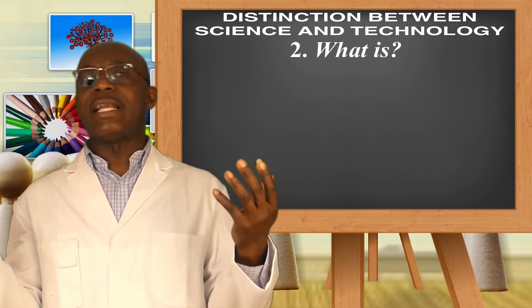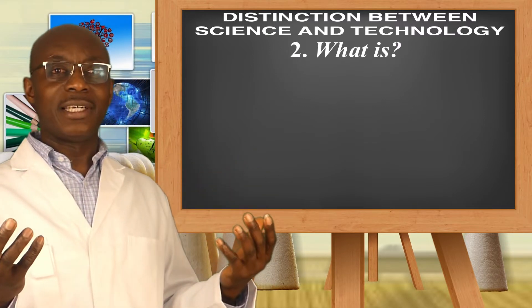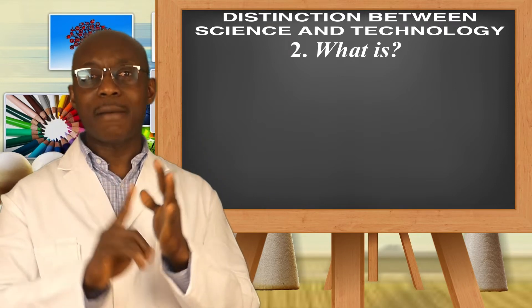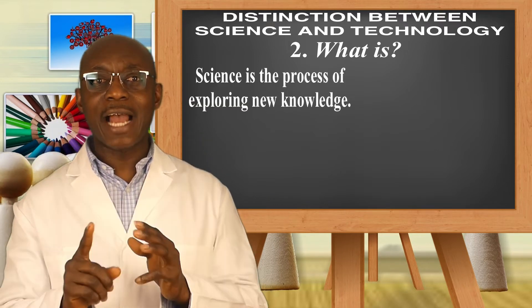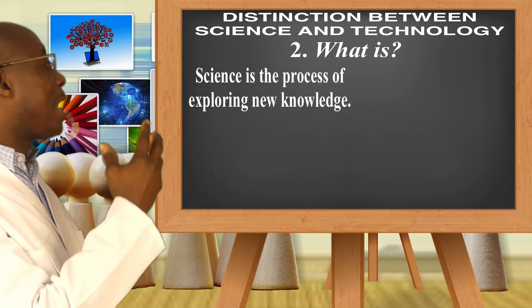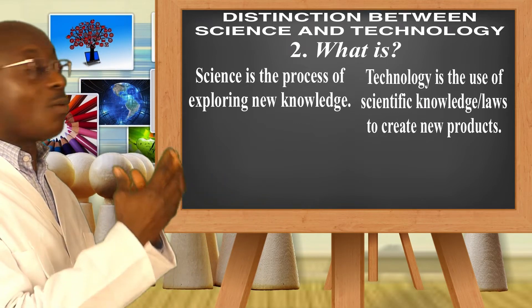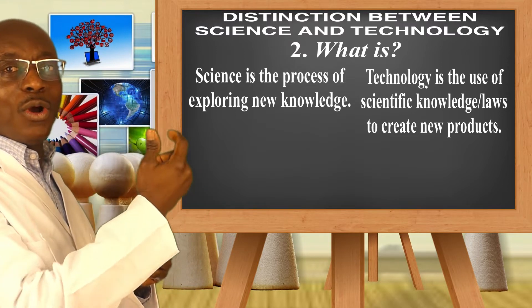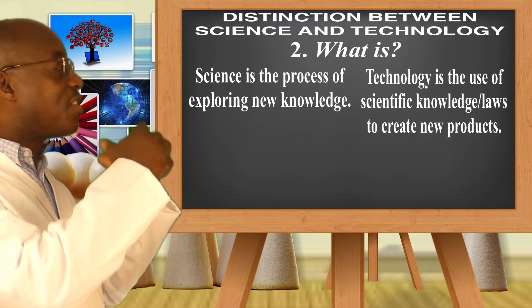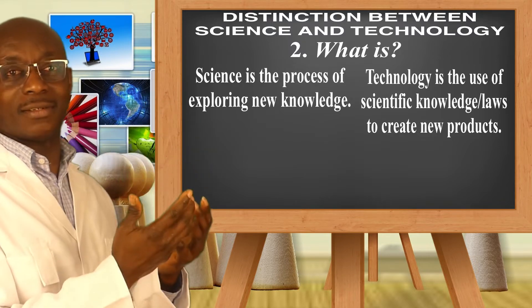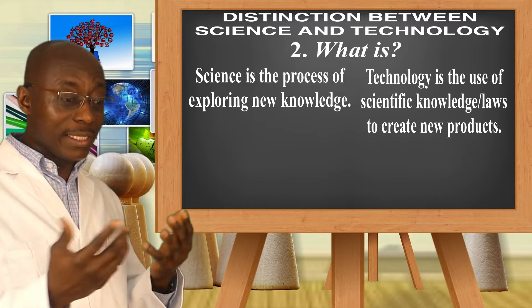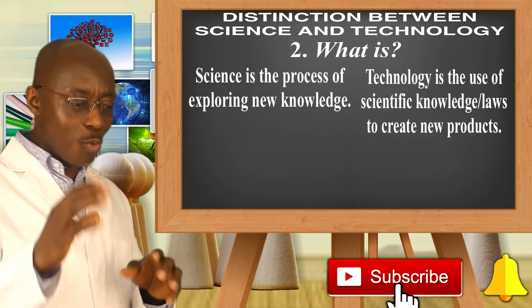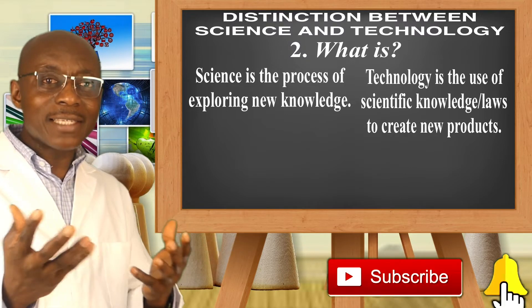So that is technology and science in terms of meaning. But when we say what is science or what is technology, can we distinguish between the two also? Yes. So point number two. Science is a process of exploring knowledge, whilst technology is the use of scientific knowledge or scientific laws to create new products. So when you decide to learn more about things in nature, finding out why they do certain things and so on and so forth, that is science.